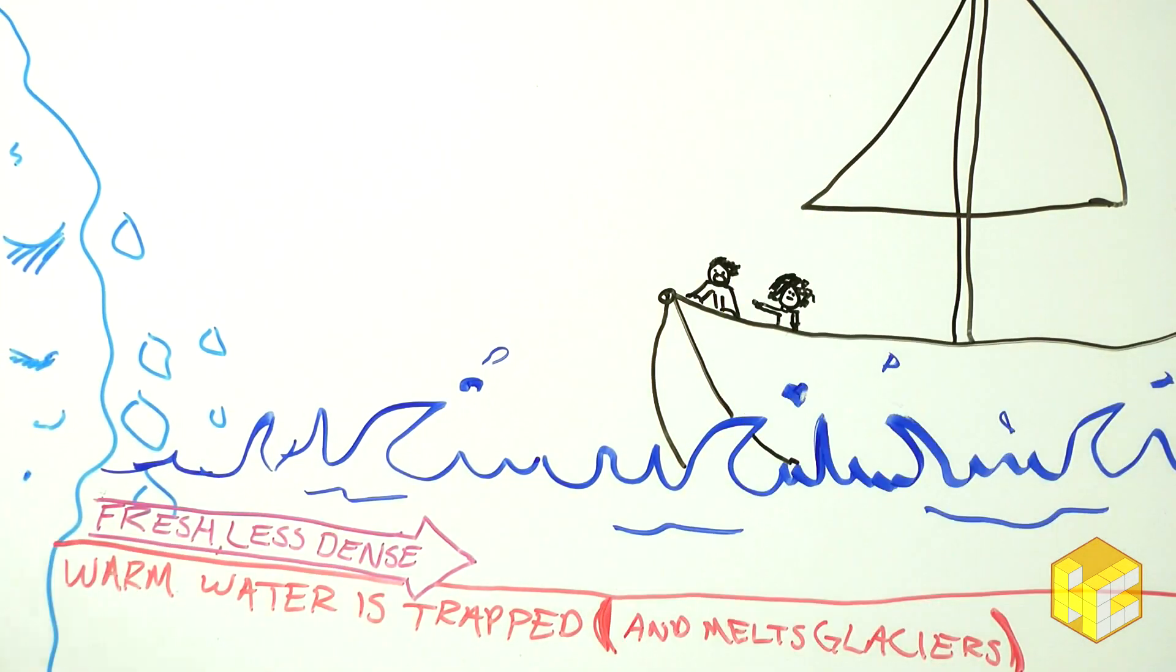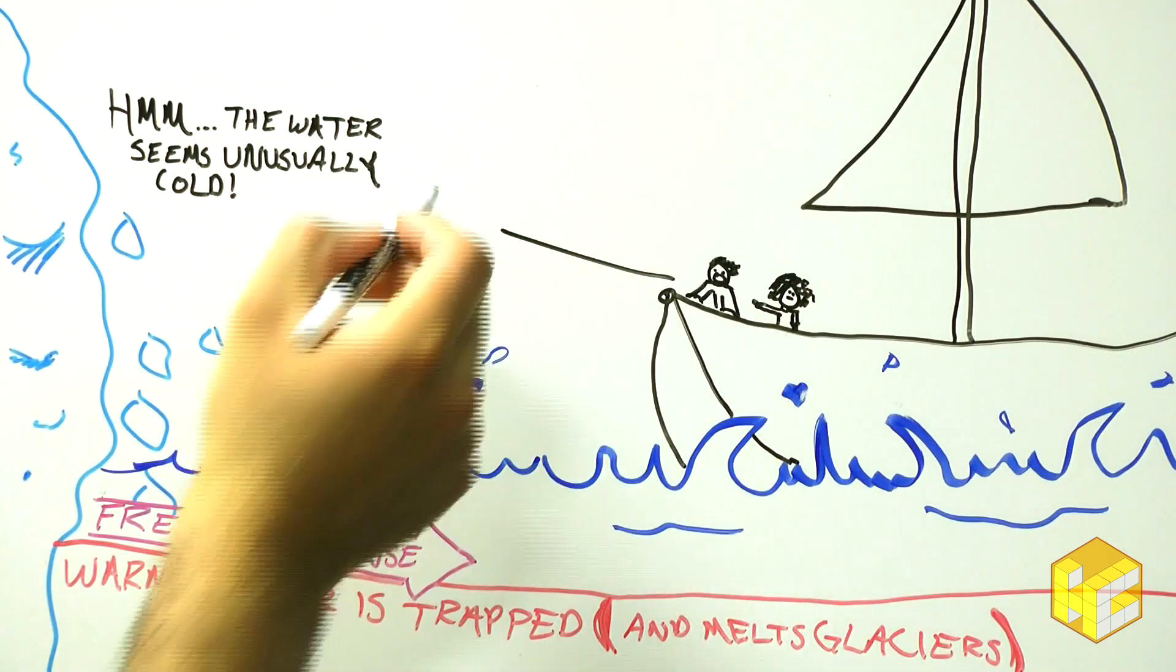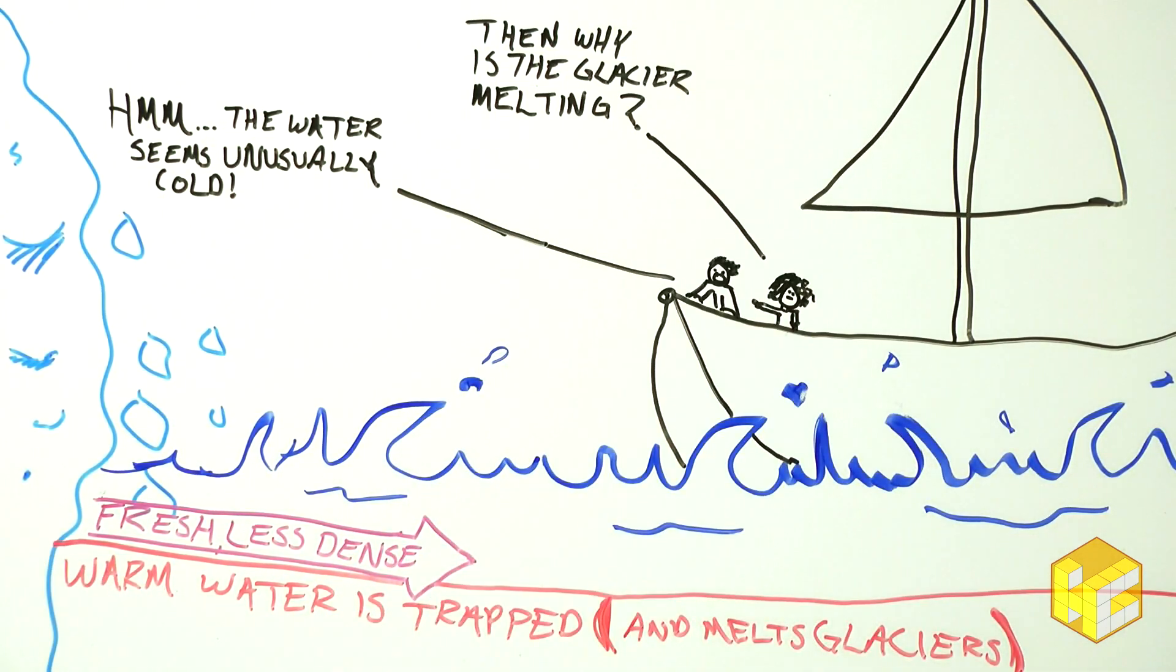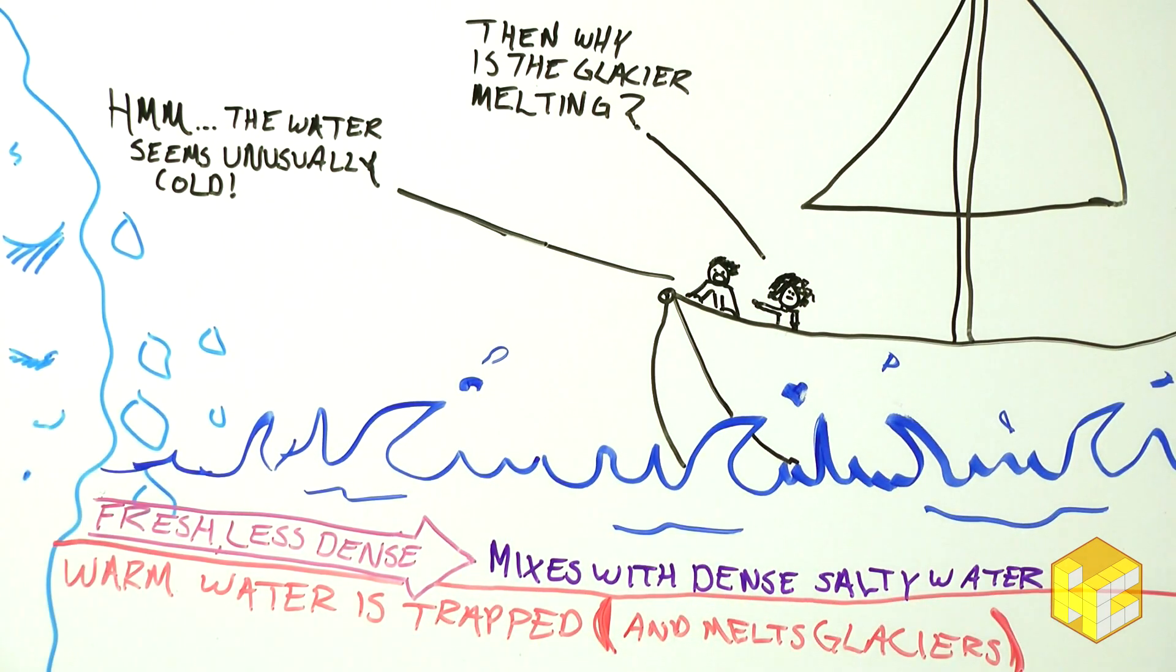Not only does this interfere with the creation of bottom water, but it also traps warm water beneath the surface, where it is unable to release its thermal energy. This results in increased glacial melt, and creates a feedback loop.